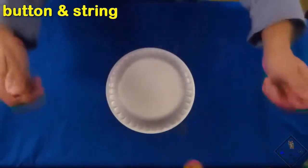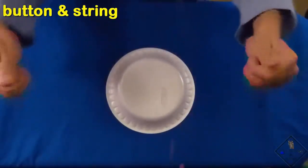He then winds up the string by swinging the button in a circle between his thumbs. The string needs to be very twisted for this to work.